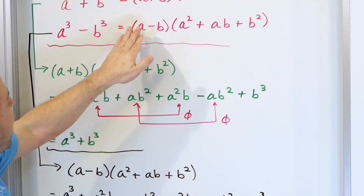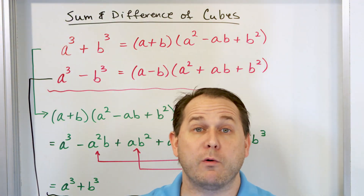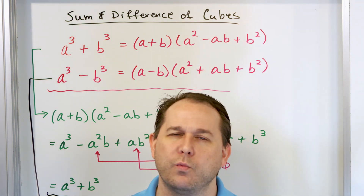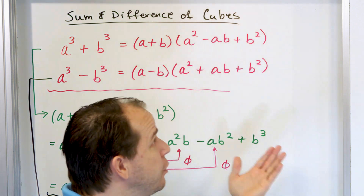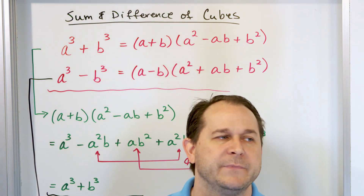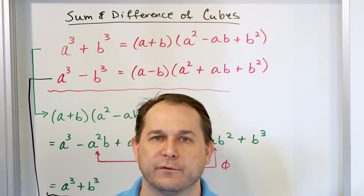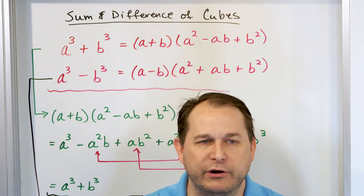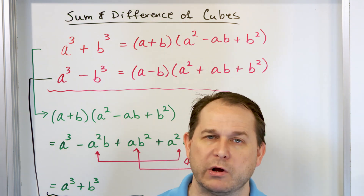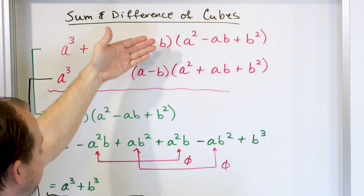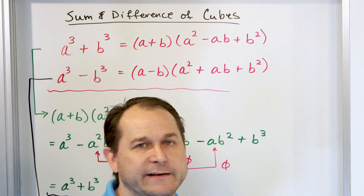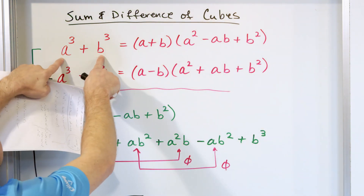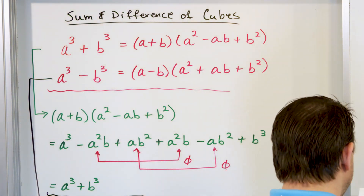Most books just write these formulas down and say to use them, but I don't want you to think they come from nowhere. Someone a long time ago worked on special cases, figured out the correct form, and probably did it by backwards multiplying — showing the left-hand side equals the right-hand side. Now let's use these to factor things. For example, if you're given T cubed minus 27 and asked to factor it.